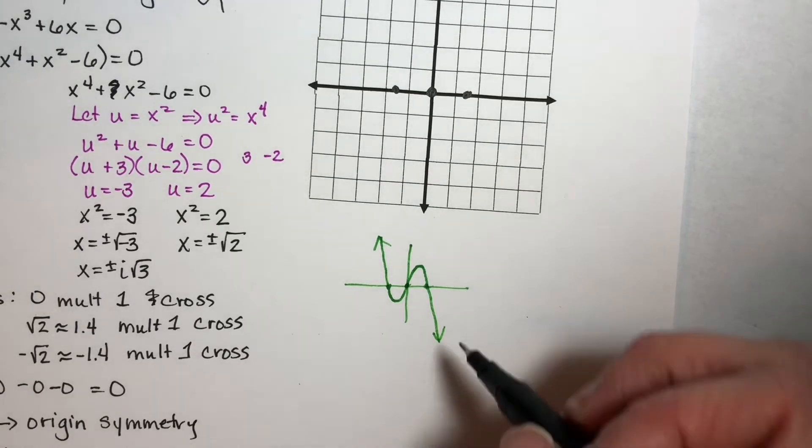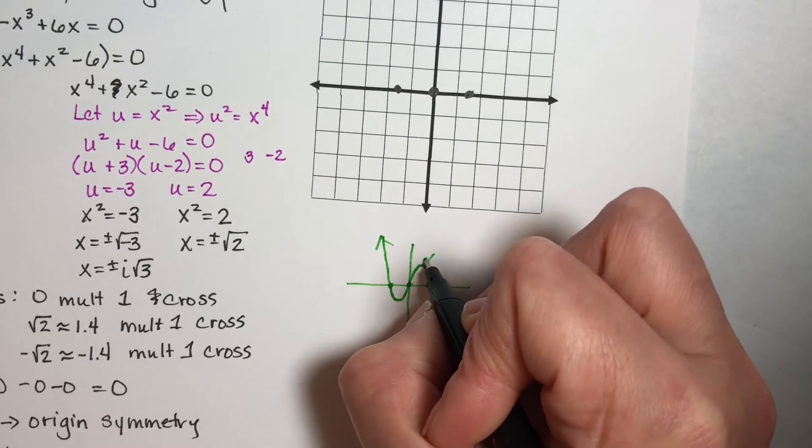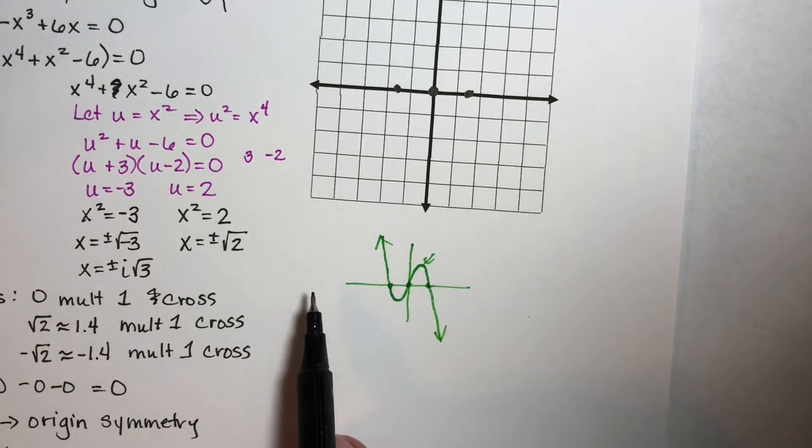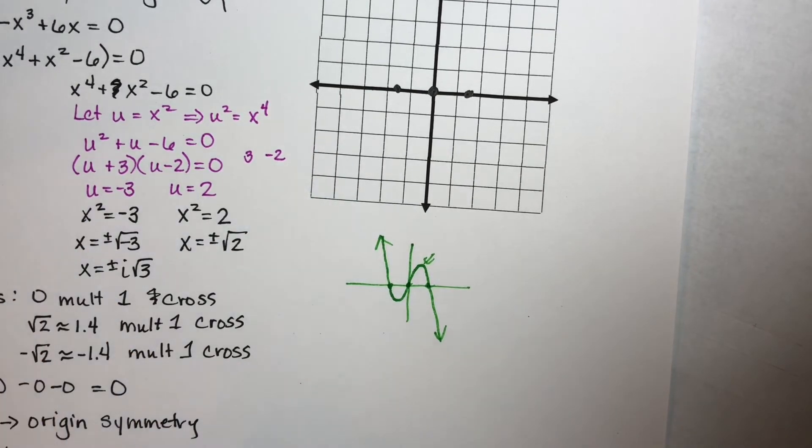Now if you'd like to, you can plug in some values to find out how high you go down here and here. But on most of your homework problems, you're going to have three or four, maybe five graphs to choose from, and you'll pick the one that fits your information. Let's go ahead and do that.